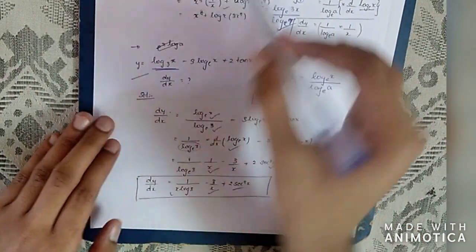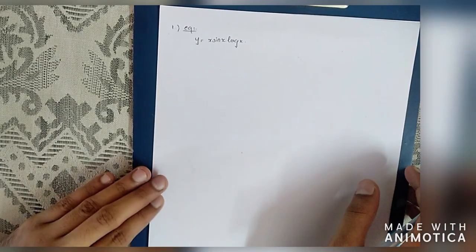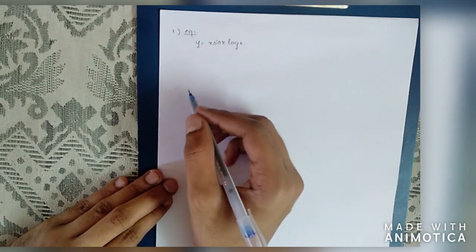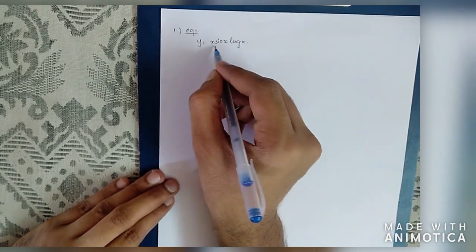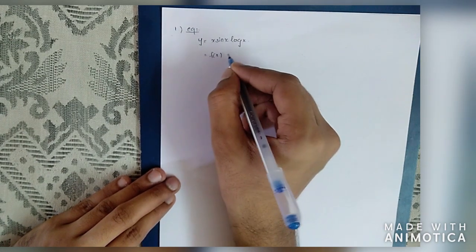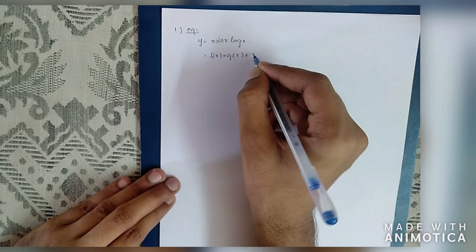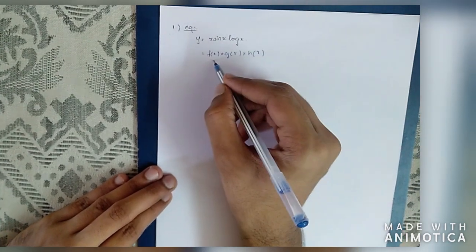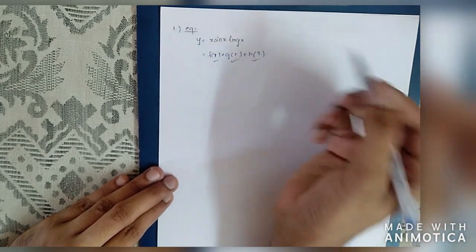Now we have another problem using the product rule. y is equal to x sin(x) log(x). This involves three functions: f(x), g(x), and h(x) — all single-variable functions multiplied together.